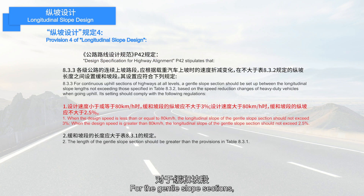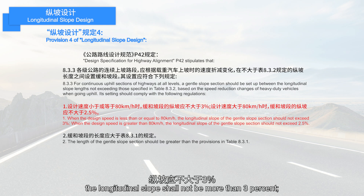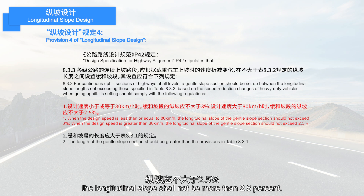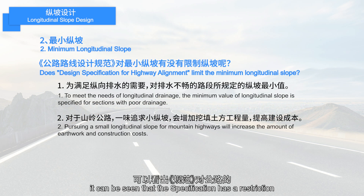Regulation 4: for gentle slope sections, when the design speed is less than or equal to 80 kilometers per hour, the longitudinal slope shall not be more than 3%. When the design speed is greater than 80 kilometers per hour, the longitudinal slope shall not be more than 2.5%. From the above, it can be seen that the specification has clear restrictions on the maximum longitudinal slope of highways.